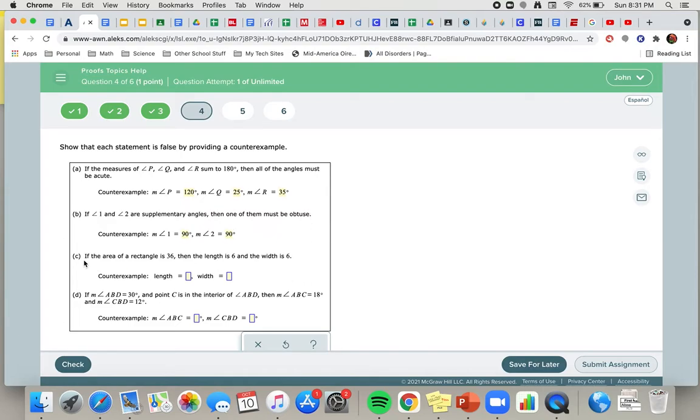Letter C: if the area of a rectangle is 36, then the length is 6 and the width is 6. Can you find a counterexample where you're going to have a rectangle and your area is going to be 36, but it's not going to be 6 by 6? Yeah, there's tons of them. You could do 12 and 3, or you could do 9 and 4. You could even go into fractions or decimals and come up with something. There's probably a large number of options you have available.